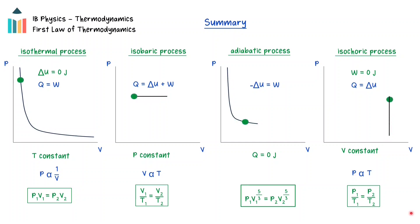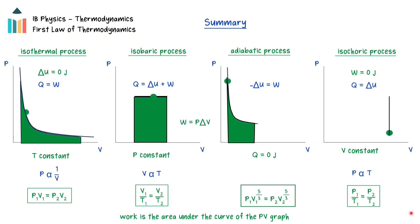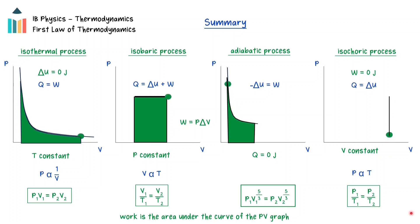In all cases, the work done by the process can be found through the area under the pressure-volume graph. In the case of an isobaric process, because the graph is rectangular, the relationship work equals pressure times the change in volume can be used. Thank you for watching!